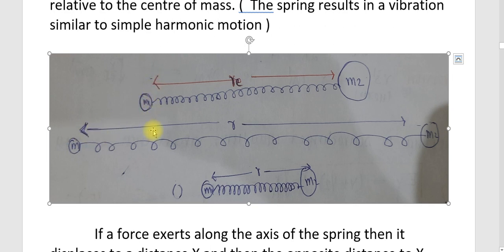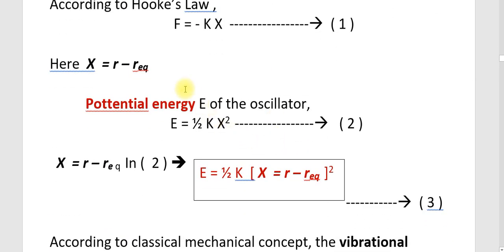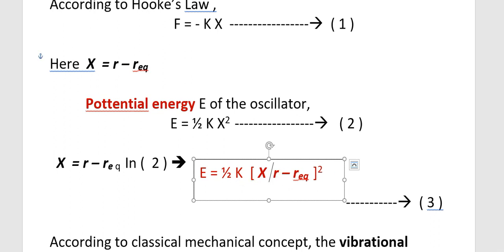The displacement x is the distance from the equilibrium position — that is, x = R - R_eq, where R is the internuclear distance and R_eq is the equilibrium internuclear distance. We know that the potential energy E of an oscillator is E = ½kx². Substituting x = R - R_eq into this equation, we get E = ½k(R - R_eq)².